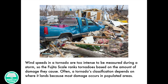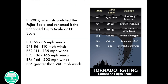Wind speeds in a tornado are too intense to be measured during a storm, so the Fujita scale ranks tornadoes based on the amount of damage they cause. Often a tornado's classification depends on where it lands because most damage occurs in populated areas. In 2007, scientists updated the Fujita scale and renamed it the Enhanced Fujita scale, or EF scale.